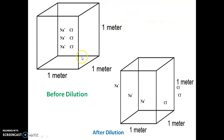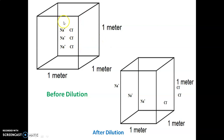To understand why specific conductance decreases: recall that specific conductance refers to the conductance observed in 1 meter cube of solution. In that fixed volume, when dilution occurs, the number of ions per unit volume decreases.